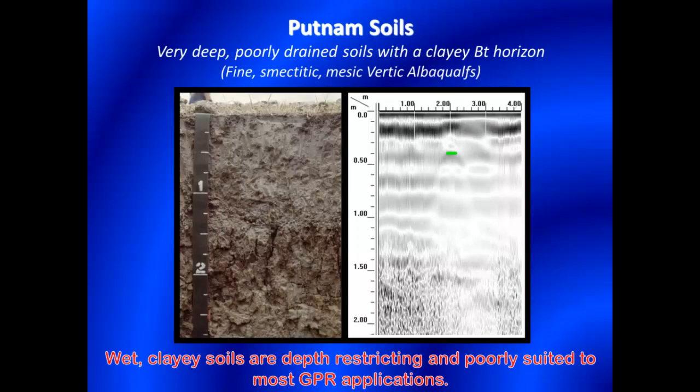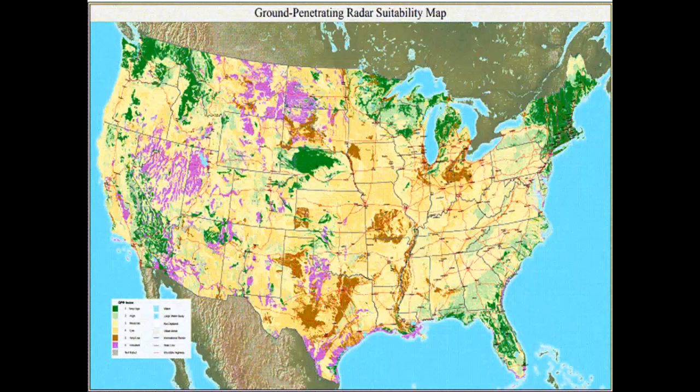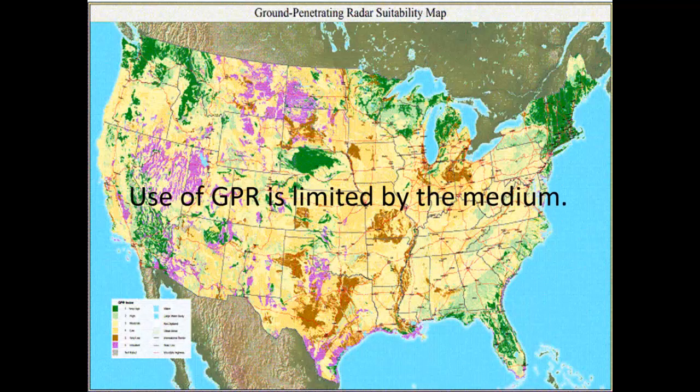The depth of investigation is restricted in wet clay soil materials. In this example, from an area of Putnam soils in Missouri, the depth of investigation is less than 50 centimeters. The top of a metal disc, which was buried at a depth of 40 centimeters, had been highlighted with a green line on the radar record shown on the right. This disc, which was buried at the top of the subsoil, is barely visible. The subsoil contains about 60 percent clay. The effectiveness and penetration depth of GPR are soil dependent. Ground penetrating radar soil suitability maps show the relative suitability of soils for GPR applications, and the spatial information contained on these maps can help GPR service providers determine the relative appropriateness of using GPR in their investigations. As shown on this map, areas that are colored green and considered well-suited to GPR represent only 22 percent of the conterminous United States.